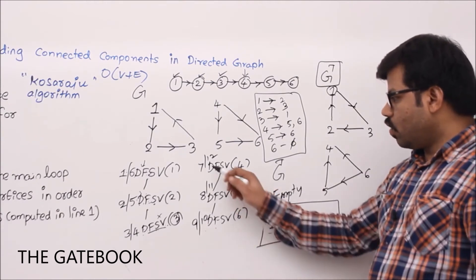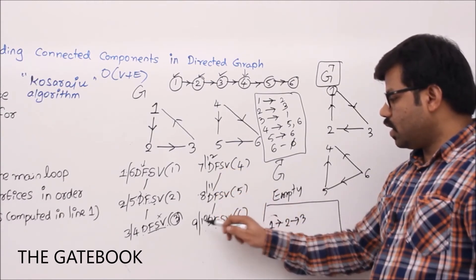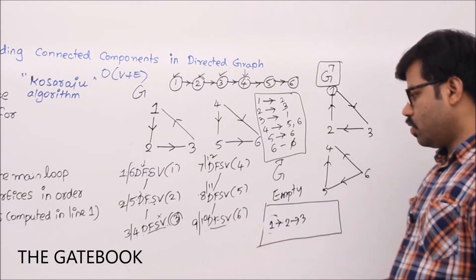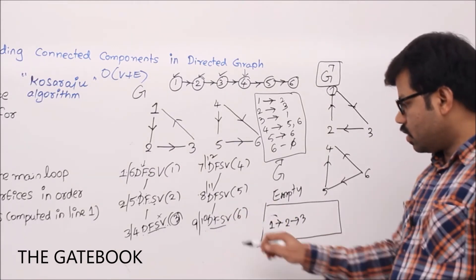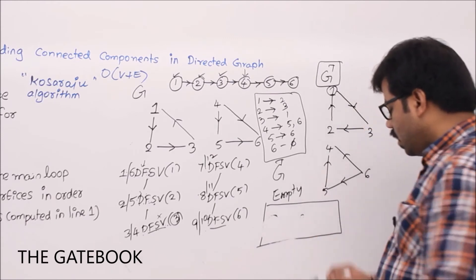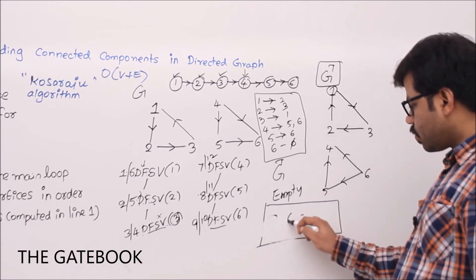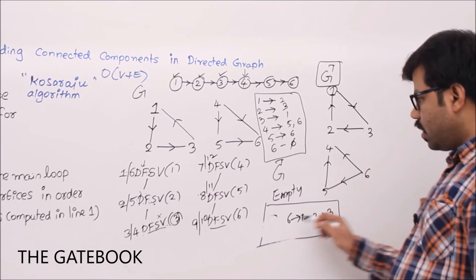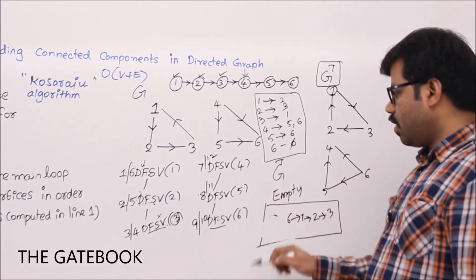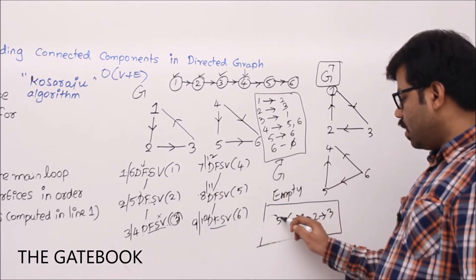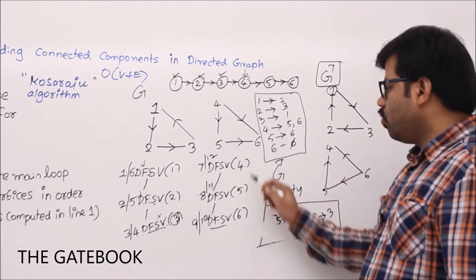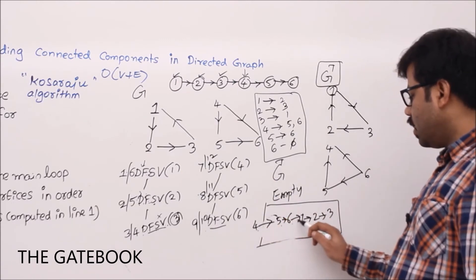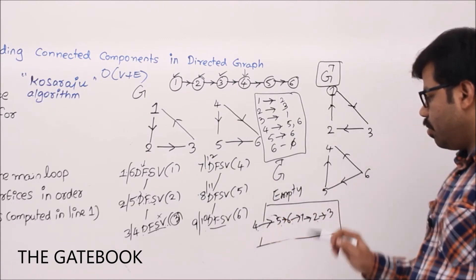Continuing: vertex 5 closes — add 5 at front. Then vertex 4 closes — add 4 at front. So the final order in the linked list is: 4, 5, 6, 1, 2, 3. This gives us the decreasing finishing time order for the DFS on G transpose.